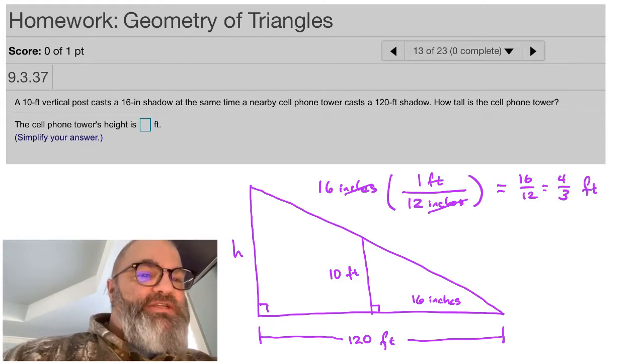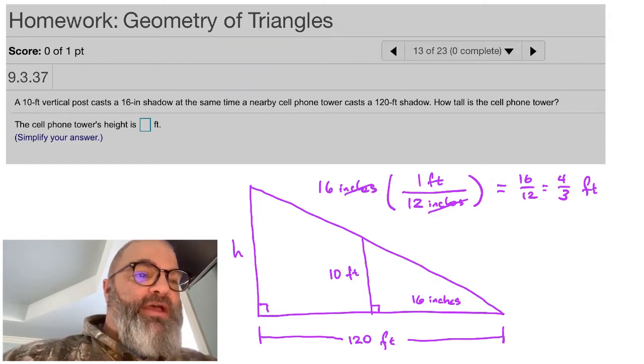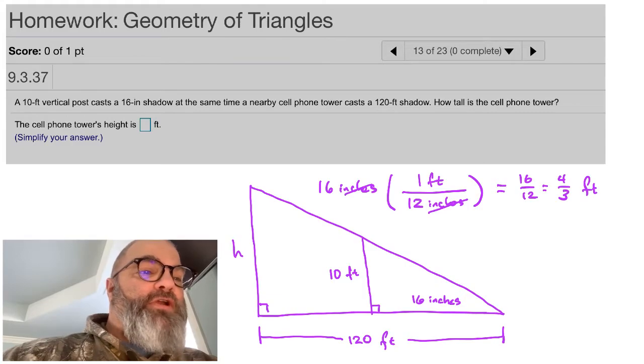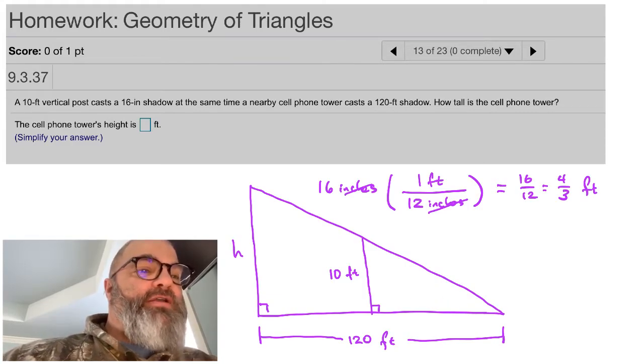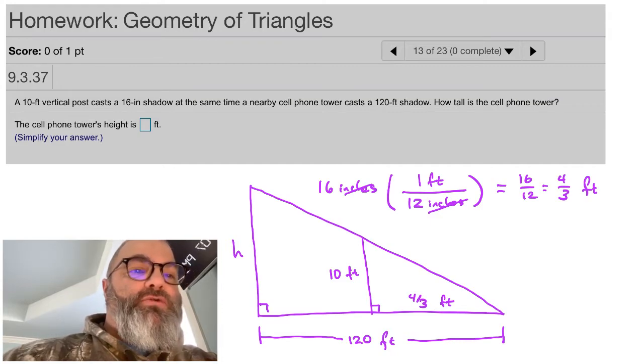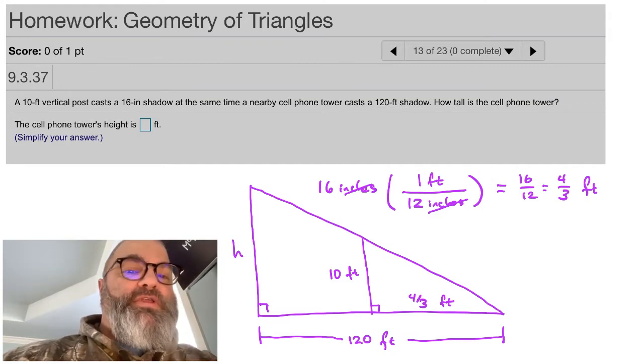Instead of that 16 inches on the side of that short shadow, we can get rid of that and really make that a value of 4 thirds feet. With that, we are ready to come in and do the work with the similar triangle.